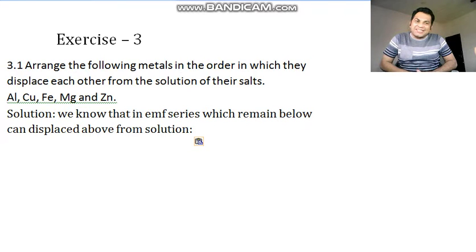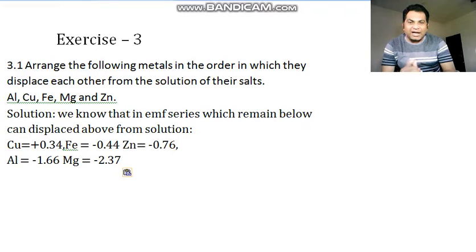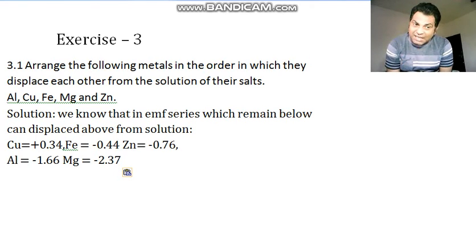Here aluminum, copper, iron, magnesium, zinc - we have the value. I am putting the value: copper value +0.34, iron value -0.44, zinc value -0.76, aluminum value -1.66, and magnesium value is -2.37. I have arranged them in order.